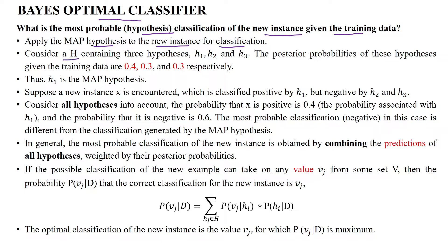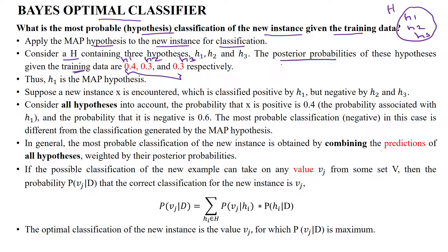Consider a hypothesis space having three hypotheses: H1, H2, and H3. The posterior probabilities of these hypotheses given the training data are: H1 is 0.4, H2 is 0.3, and H3 is 0.3. When checking these three hypotheses, 0.4 is the maximum value among the three.